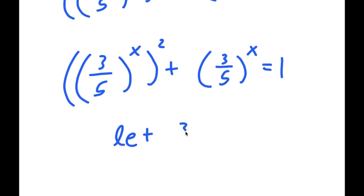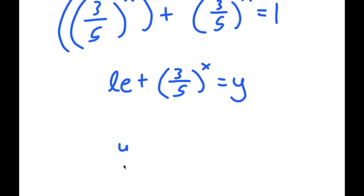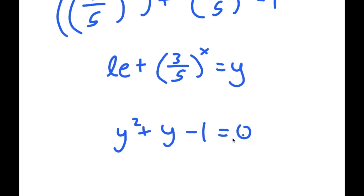From here, I'm going to let 3 over 5 to the power of x equal to the variable y. So now I have y squared plus y minus 1 equals 0.